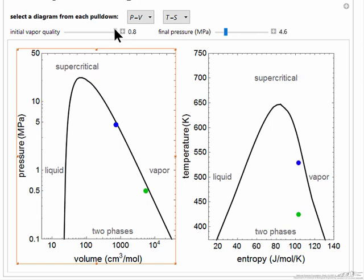If I again reset and look at the case where the quality is lower, and now I increase the pressure, I have all liquid. And of course now increasing the pressure of liquid, I don't change the temperature very much, but I can change the pressure significantly.